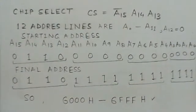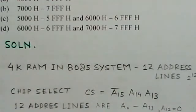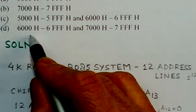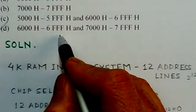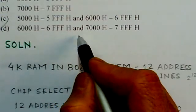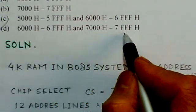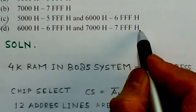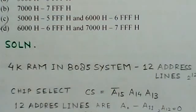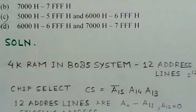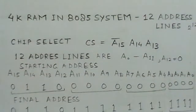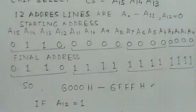As per the options, option D is correct here. Option D has two address locations: 6000H to 6FFFH and 7000H to 7FFFH. This option D is the right choice because this RAM could have both of these address ranges, corresponding to A12 equal to 0 and A12 equal to 1 respectively.